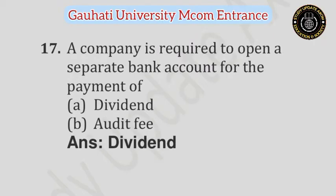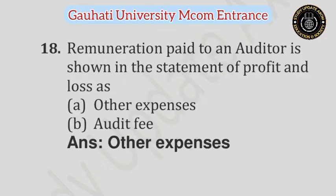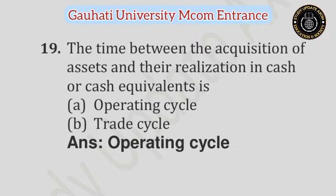Question number 17: A company is required to obtain a separate bank account for the payment of — Option A: Dividend, Option B: Audit Fee. Answer is Dividend. Question number 18: Remuneration paid to an auditor is shown in the Statement of Profit and Loss as — Option A: Other Expenses, Option B: Audit Fee. Answer is Other Expenses. Question number 19: The time between the acquisition of assets and the realization in cash or cash equivalents is — Option A: Operating Cycle, Option B: Trade Cycle. Answer is Operating Cycle.